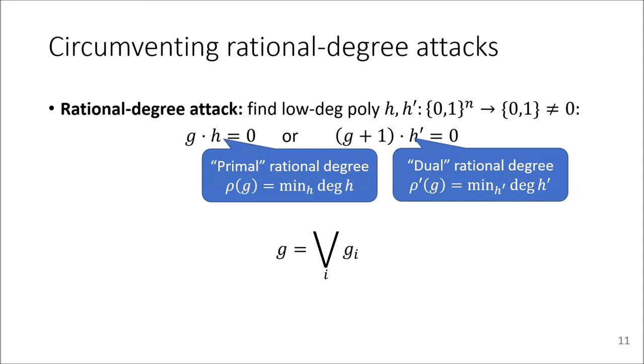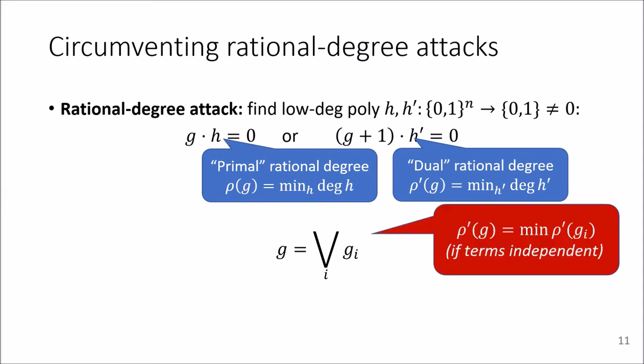And call the minimal degree of h prime such that g plus one times h prime is zero, the dual rational degree of G.